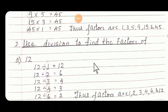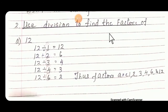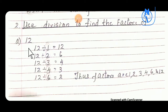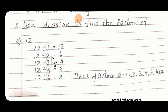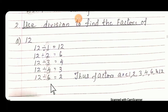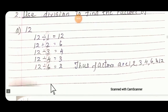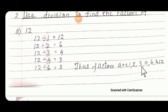Question number 2. Use division to find the factors. Earlier we were doing multiplication; now by dividing we have to find the factors. Take 12 and divide by 1. If you get remainder 0 then it is a factor. 12 divided by 2 — divide and see, you will get remainder as 0. By 3, by 4, and by 6 also — here we get remainder as 0. Thus these are the factors of 12.